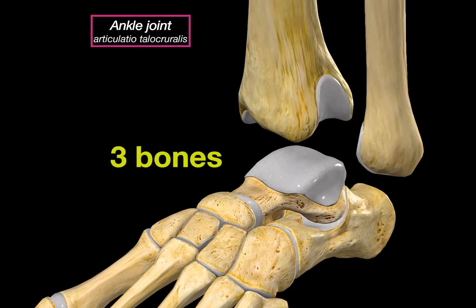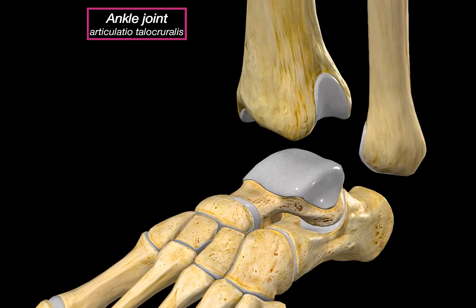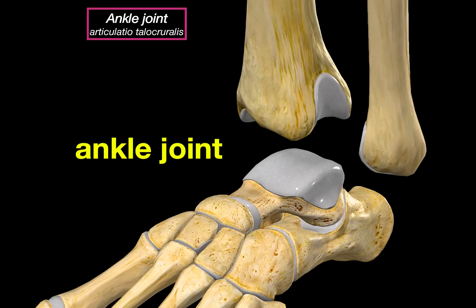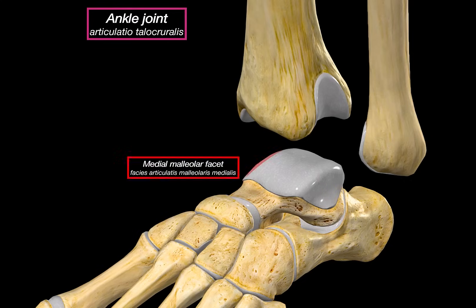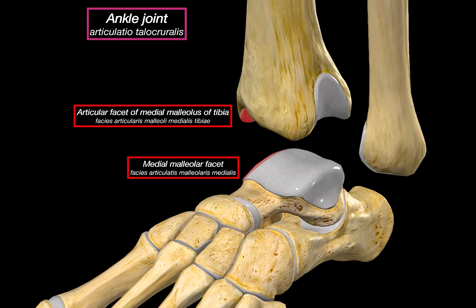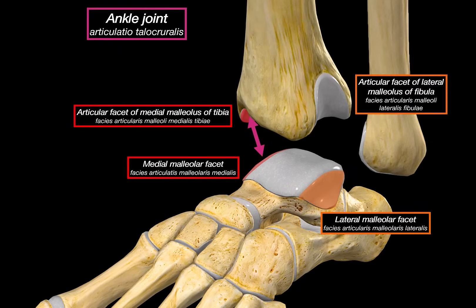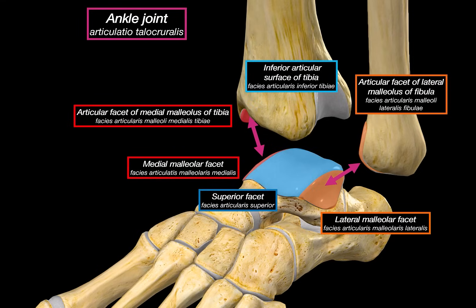This is an articulation between three bones: the talus, the distal end of the tibia, and the lateral malleolus of the fibula. Together these form the ankle joint through a specific set of articulating surfaces. First, we have the medial malleolar facet on the talus, which articulates with the articular facet of the medial malleolus of the tibia. This is the lateral malleolar facet of the talus, connecting with the articular facet of the lateral malleolus of the fibula. And in the middle, we've got the superior facet, which meets the inferior articular surface of the tibia on its underside.